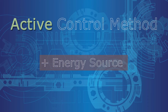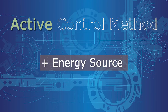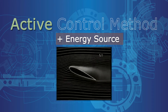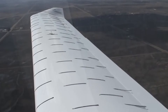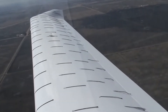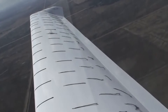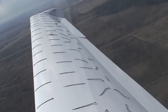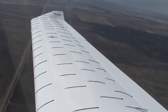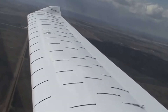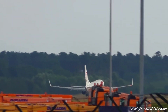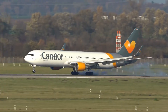Active flow control methods use an external source of energy to control the flow and manipulate the boundary layer to obtain the desired performance outcome. Different active flow control methods have been used in aircraft prototypes to reduce the stalling speed and increase the stalling angle of attack. It is very efficient in delaying the flow separation on aerodynamic surfaces, and these devices are certainly advantageous in lower speed maneuvers like takeoffs and landings.